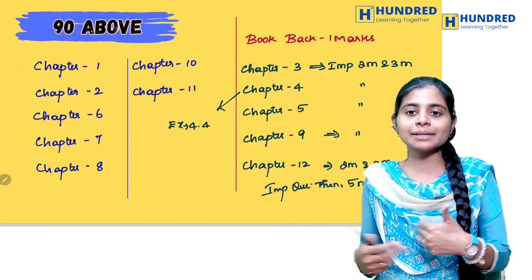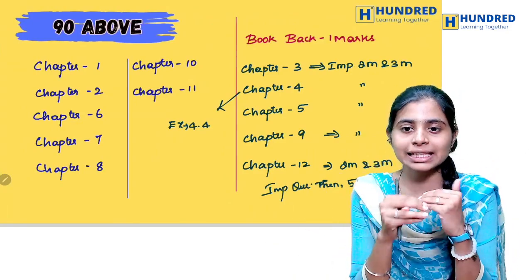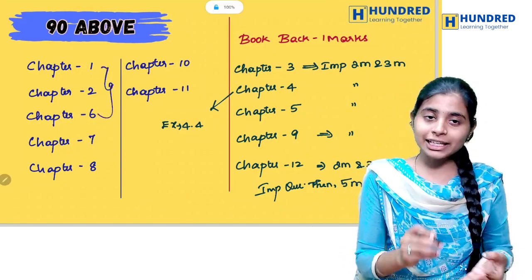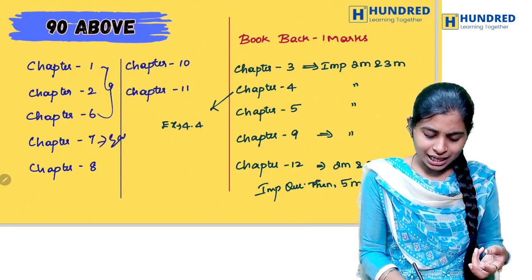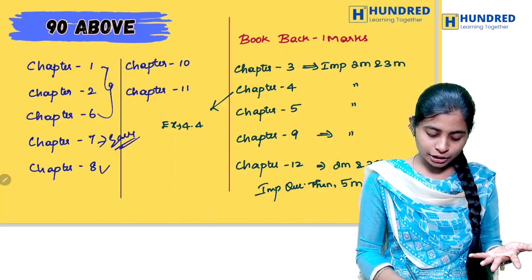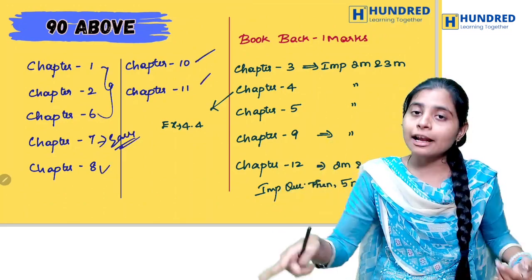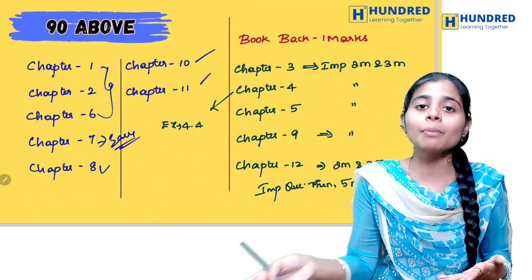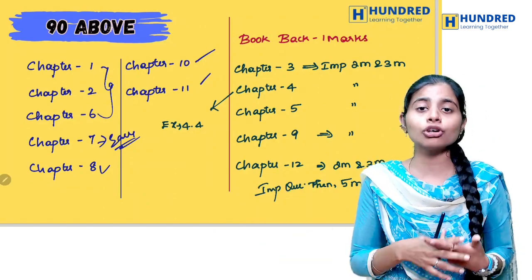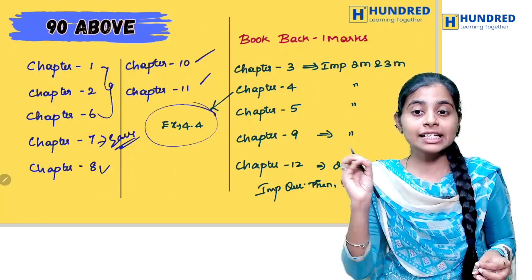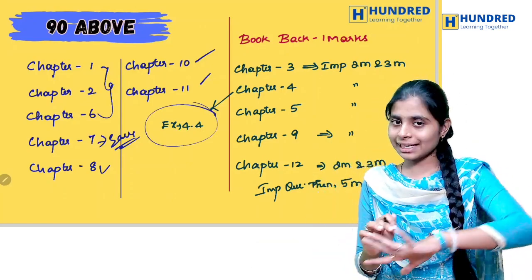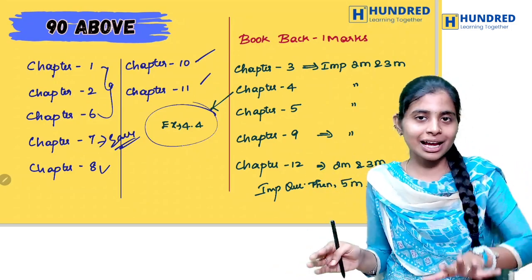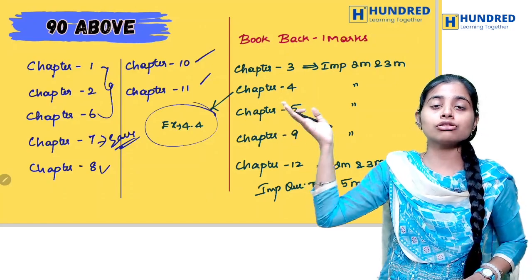For the 90 above category, we need to cover Chapters 1, 2, 6 from Volume 1. Chapter 6 — the matrix chapter — is very easy, that is why we need to do it. Then Chapters 8, 10, 11 — this is how you will learn it. Chapter 12 — very helpful, very high weightage chapters like vector algebra and differentiation in 12th year are high weightage. In Chapter 4, Exercise 4.4 is important. In Chapter 5, important 2 marks and 3 marks. For centum, learn 90% and cover almost 6 to 7 chapters at your fingertips.